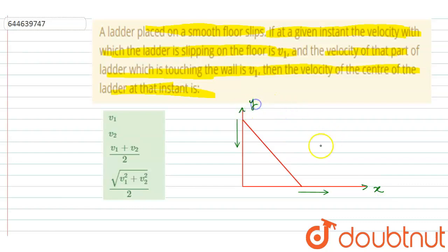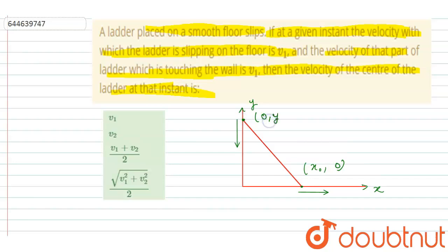Let's set up coordinates with x-axis along the floor and y-axis along the wall. The bottom point of the ladder has coordinates (x₀, 0) and the top point has coordinates (0, y₀). The center of the ladder will have coordinates (x₀/2, y₀/2). This bottom point has velocity v1 and the top point has velocity v2.